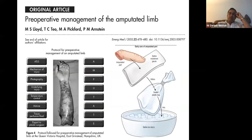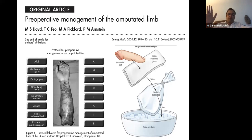For pre-op management, ensure the amputated part is properly cared for: saline-moist gauze in a sealed bag on ice. The East Grinstead group had a nice protocol — confirm if it's an isolated injury, go through ATLS, assess mechanism (guillotine or avulsion), use photography and telemedicine to determine urgency and level of injury, control temperature, and get the patient to the plastics center as soon as possible.